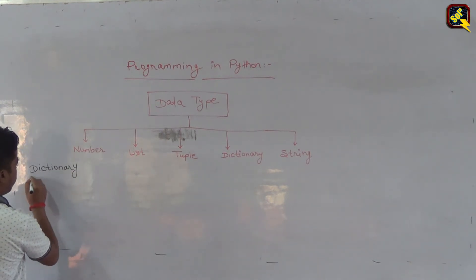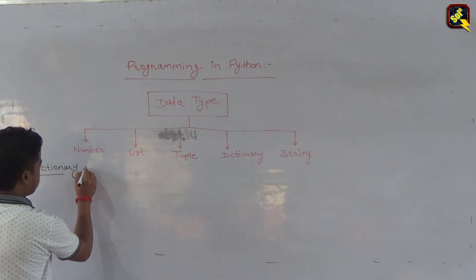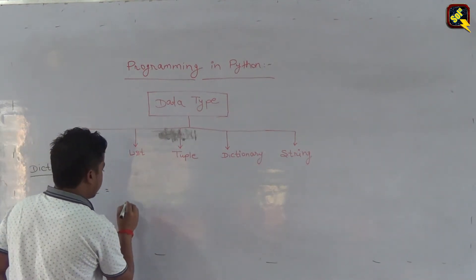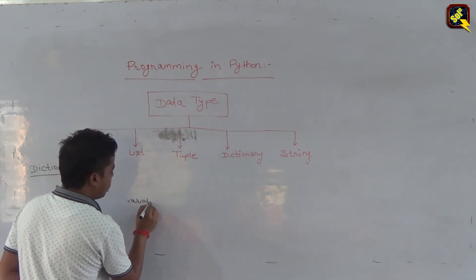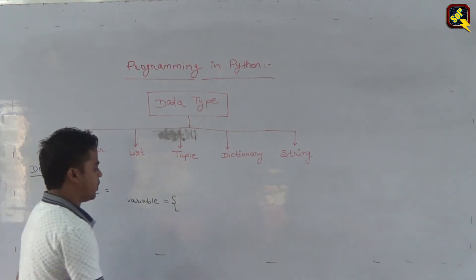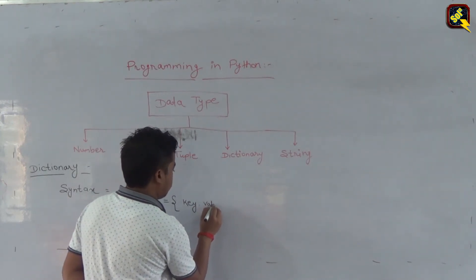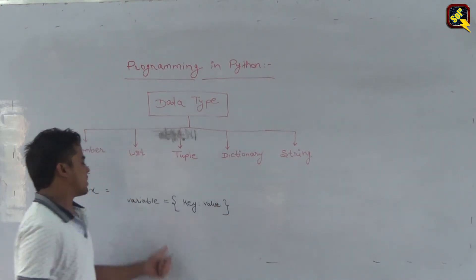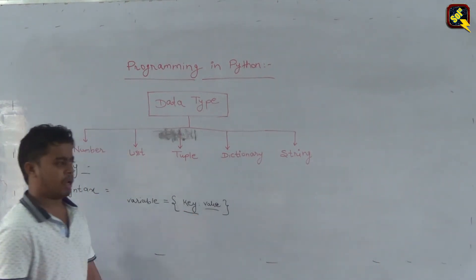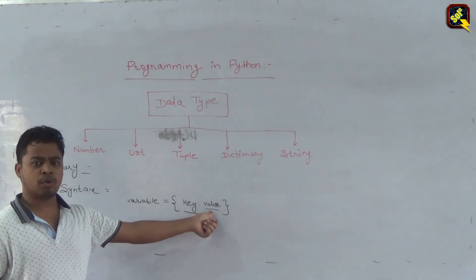The next data type is Dictionary. You all might have seen a dictionary at home - a similar concept exists in Python. The syntax is: dictionary name or variable name equal to, and curly braces are used. In the dictionary, values are stored in pairs of key and value. The key indicates a defined key and the value is whatever you want to store.